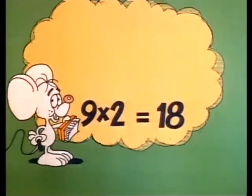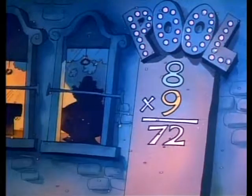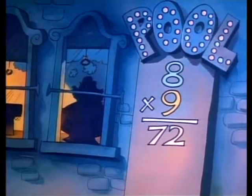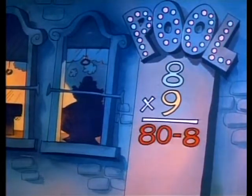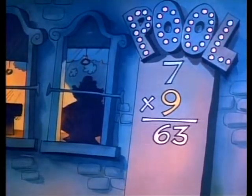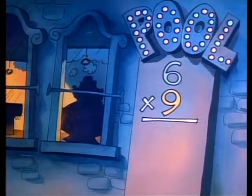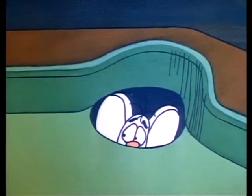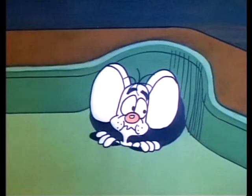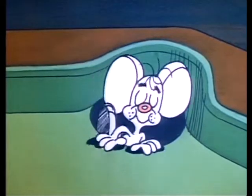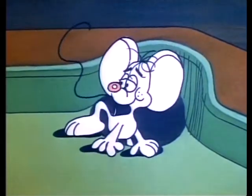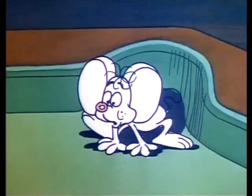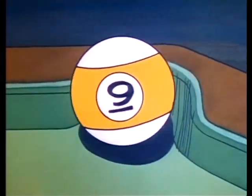...if you'd multiplied by 9. I mean, 8 times 9 is 80 minus 8, and 7 times 9 is 70 minus 7, and 6 times 9 is 60 minus 6. You could use those tricks. Cause you must have some secret way you can beat it, or else you'll need it — but the naughty number 9.